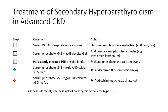Despite the above measures, if PTH is still elevated, treatment depends on calcium and phosphorus labs. In cases where both are low — phosphorus less than 5.5 and calcium less than 9.5 — we can use a vitamin D analog. If either calcium or phosphorus is above those values, then we use calcimimetics like Cinacalcet.